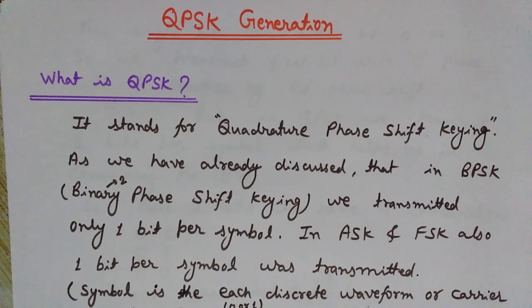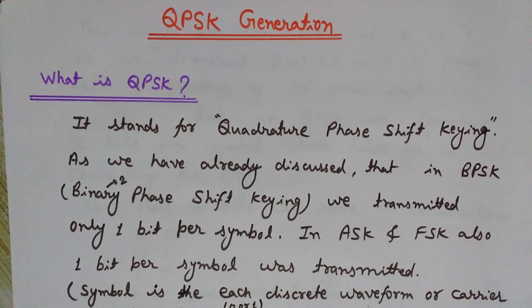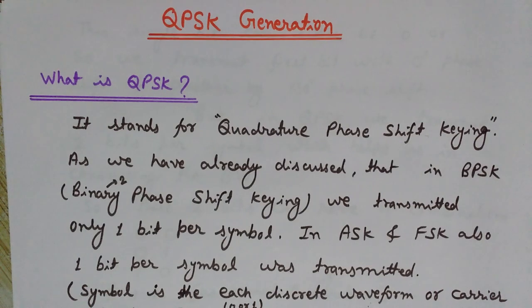In BPSK, this bit can either be one or zero, so we used two phases to transmit these two types of bits. Zero was transmitted for zero degree phase shift and one by a phase shift of 180 degrees or pi. This is known as binary because we used two phases. But in quadrature phase shift keying, we transmit two bits per symbol — in every waveform we transmit two bits.